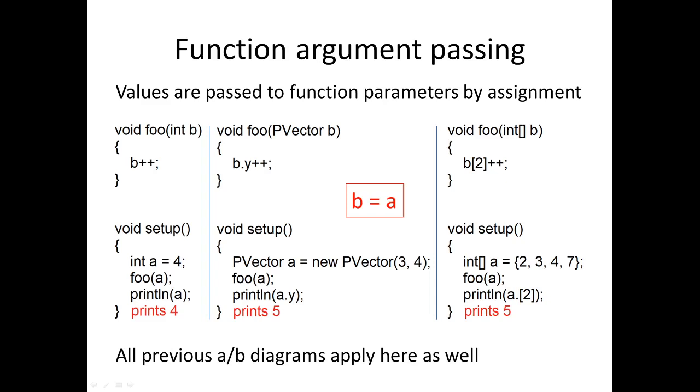We're talking about assignment here, but assignment is also what happens when we pass values into functions. You can see we've got three separate columns here, with essentially the same function foo in each. Foo's got a parameter b, and we can see down in setup we're calling foo with variable a. So what's happening in all these cases is when the function foo gets invoked, we're doing an assignment of a getting assigned to b. This is happening for all of them.